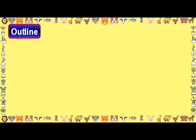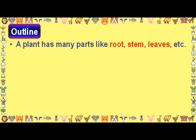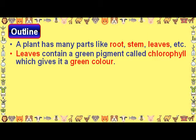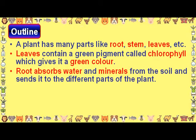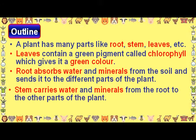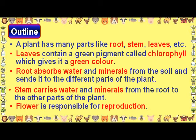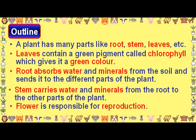Outline: A plant has many parts like root, stem, leaves, etc. Leaves contain a green pigment called chlorophyll which gives them a green color. Roots absorb water and minerals from the soil and send it to different parts of the plant. The stem carries water and minerals from the root to the other parts of the plant. The flower is responsible for reproduction.